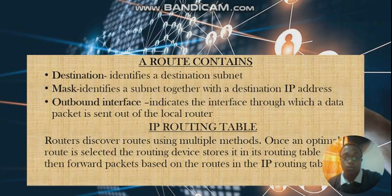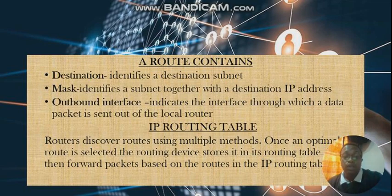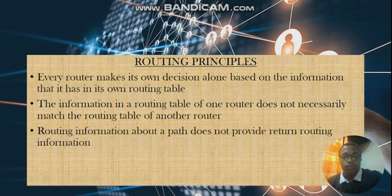When it comes to an IP routing table, a router discovers routes using multiple methods, which we'll look at later in this video. Once an optimal route is selected, the routing device stores it in the IP routing table, then forwards packets based on the routes stored there.